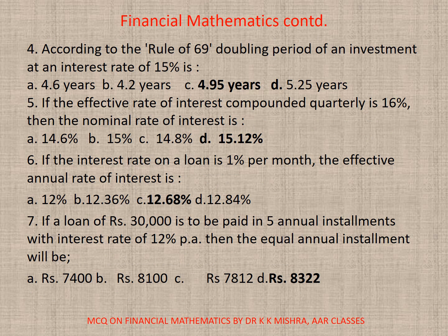Question 4: According to the rule of 69, the doubling period of an investment at an interest rate of 15% is — needs to be calculated — the correct option is C: 4.95 years.